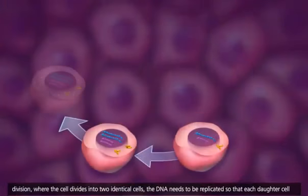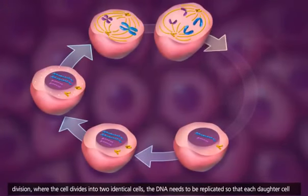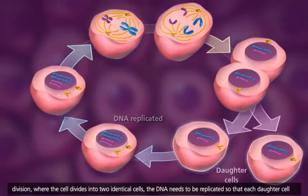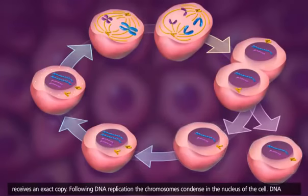Prior to cell division, where the cell divides into two identical cells, the DNA needs to be replicated so that each daughter cell receives an exact copy.